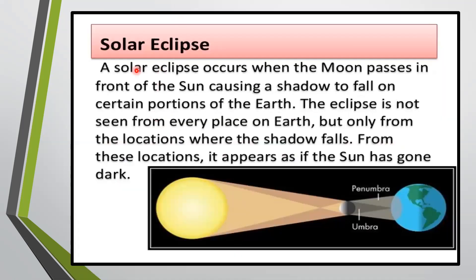A solar eclipse occurs when the moon passes in front of the sun, causing a shadow to fall on certain portions of the earth. The eclipse is not seen from every place on earth, but only from the locations where the shadow falls. From these locations, it appears as if the sun has gone dark.